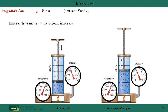Let's now look at Avogadro's law. Avogadro found that the volume of a gas is proportional to the amount of gas, or the number of moles. He held temperature and pressure constant. Here I have a gas at 300 degrees C at one atmosphere. If I add more gas, the volume increases — if I double the number of gas molecules, the volume increases by a factor of two.